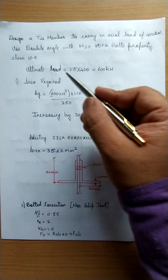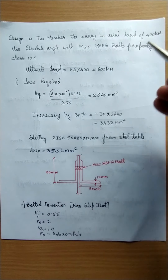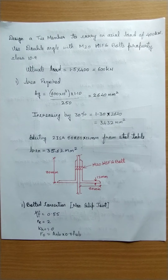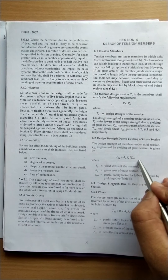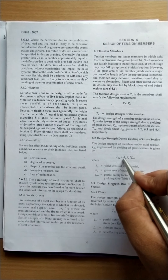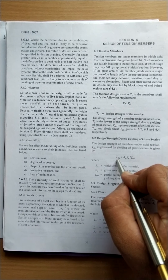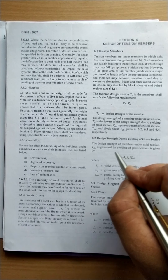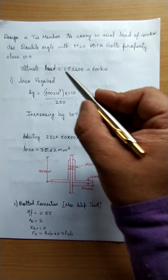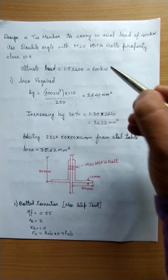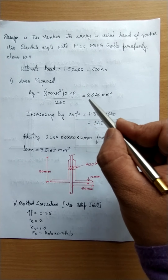First, we calculate the ultimate load: the given load multiplied by 1.5, giving 600 kilonewton. The first step is to find the gross area required. Using the formula from page 32 — Tdg = Ag·fy / γm0 — we rearrange to find Ag = Tdg·γm0 / fy. Substituting Tdg = 600 kN, we get Ag = 2640 mm².